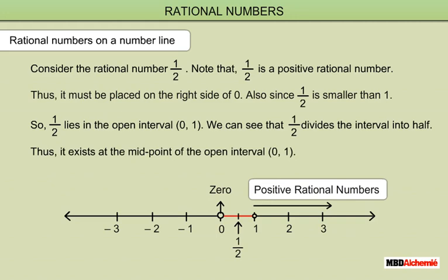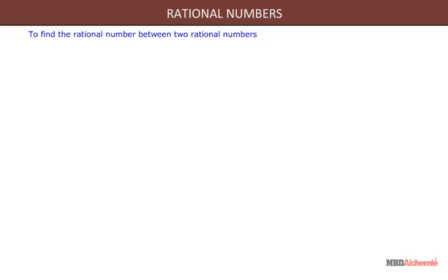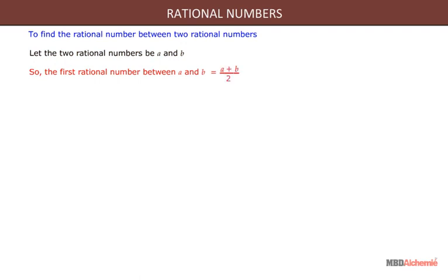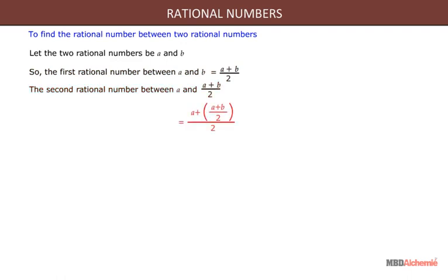To find the rational number between two rational numbers, let the two rational numbers be a and b. The first rational number between a and b is a plus b divided by 2. The second rational number between a and a plus b divided by 2 is a plus half of a plus b divided by 2. Similarly, we can find another rational number between a and b.